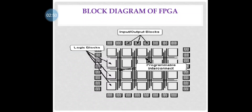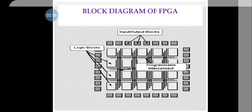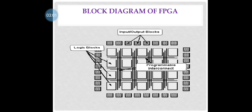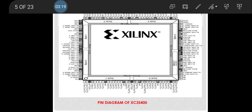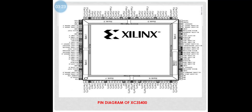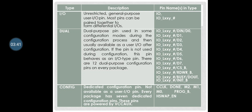This is the logic block diagram of FPGA. As you can see, the input/output blocks are on the periphery, the logic blocks are inside, and you can also see the programmable interconnects. Now, as you can see, this is the pin diagram of IC XC3S400. The X stands for Xilinx. You will now see the pin configuration and pin description of the IC.